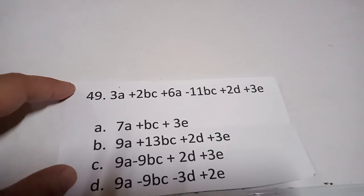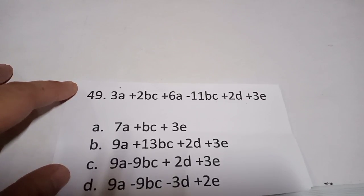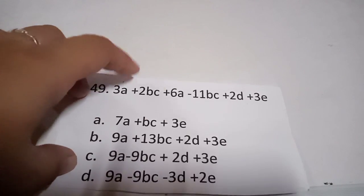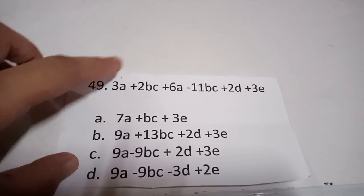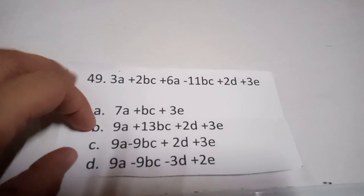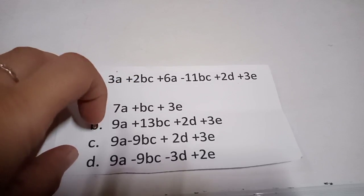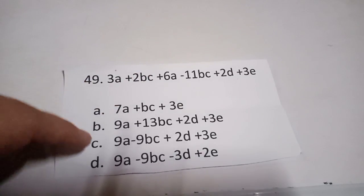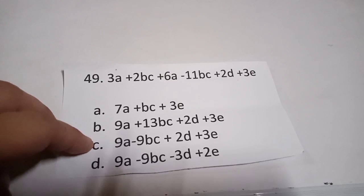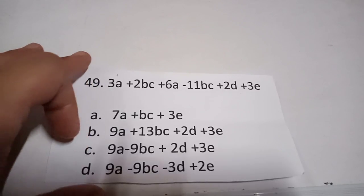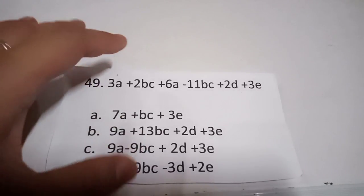The given is: 3a plus 2bc plus 6a minus 11bc plus 2d. We need to combine like terms. 3a and 6a gives 9a; 2bc minus 11bc gives negative 9bc; plus 2d; plus 3e. So the best answer is letter C: 9a minus 9bc plus 2d plus 3e. Let's proceed to number 50.